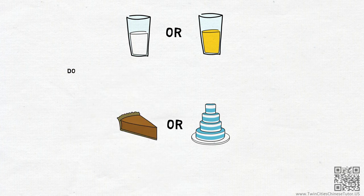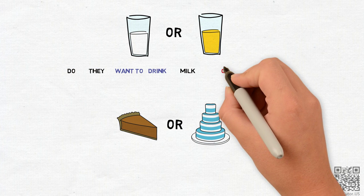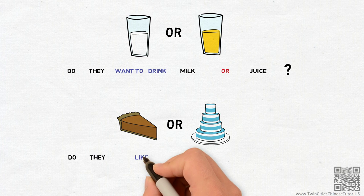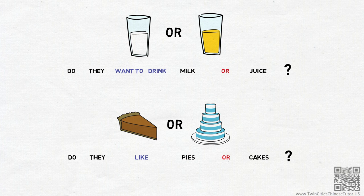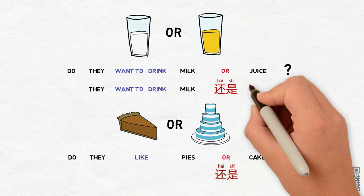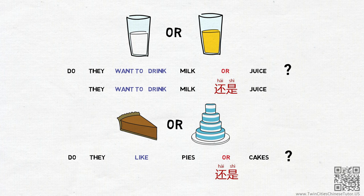Now with these rules in mind, how would you ask the questions, Do they want to drink milk or juice? And, Do they like pies or cakes? You can pause here and come up with your own answers. Okay, as you probably figured out, because we want to ask questions, we still need to use the word 还是. So the question will be, They want to drink milk 还是 juice? Or in Chinese, 他们想喝牛奶还是果汁?